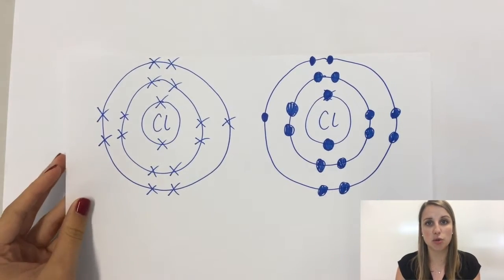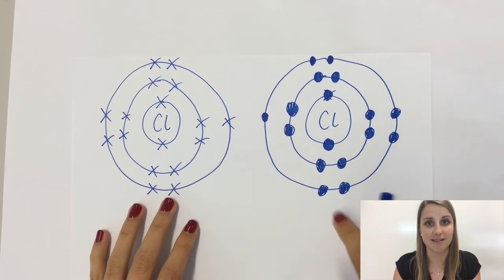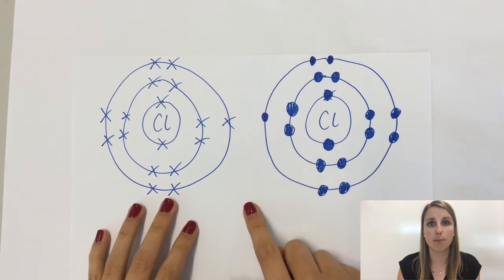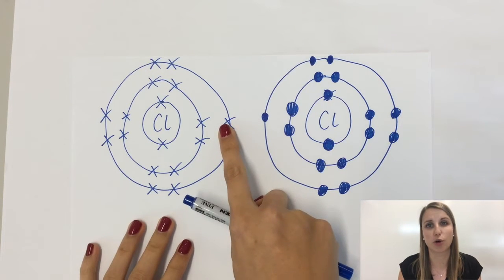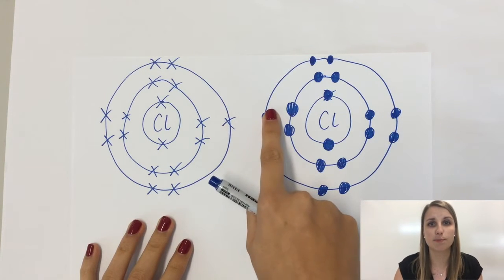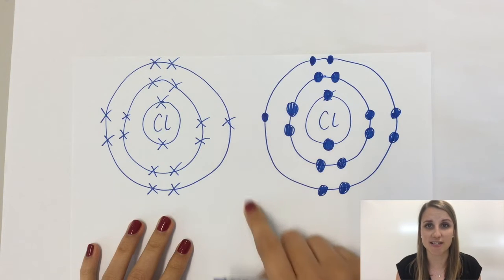What we're going to look at is the bonding between Cl2. That's between two chlorine atoms that look like this. What you need to remember is that both of these chlorines are aiming for a full outer shell. That means both of them having eight electrons in their outer shell.